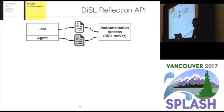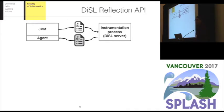Before providing more details on our extended Diesel framework, I would like to spend some words on how instrumentation in Diesel normally works. Diesel relies on a separate process for conducting the instrumentation, called the Diesel server. A native agent implemented using JVMTI is attached to the target JVM. The agent intercepts each class loaded by the JVM before the class is linked, sends each class to the Diesel server, which determines whether and how it should be instrumented, and sends the modified instrumented class back to the JVM.